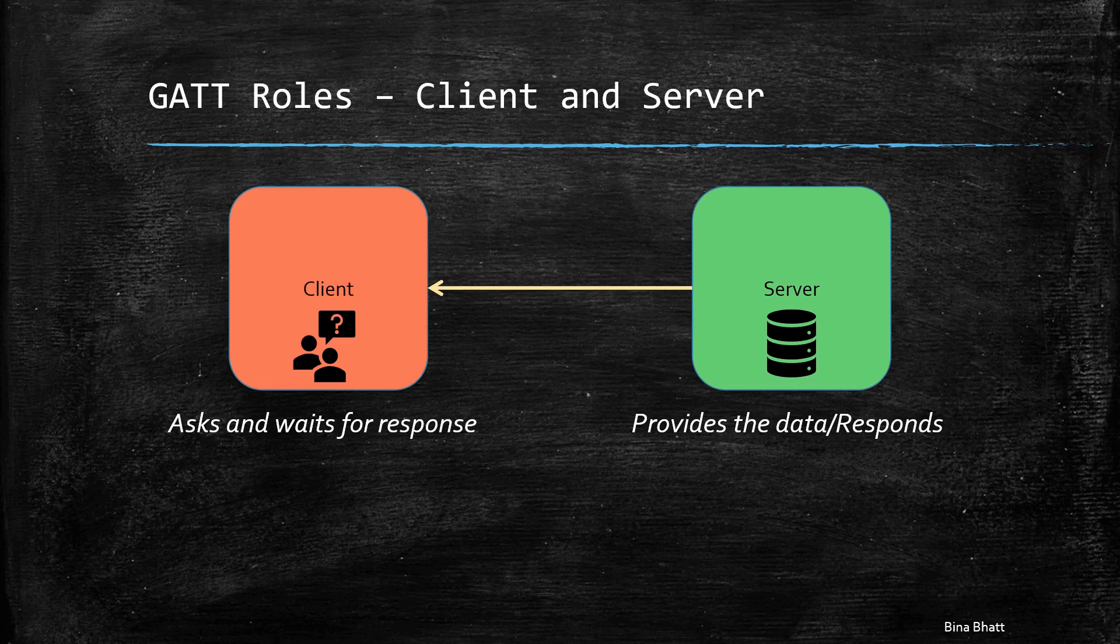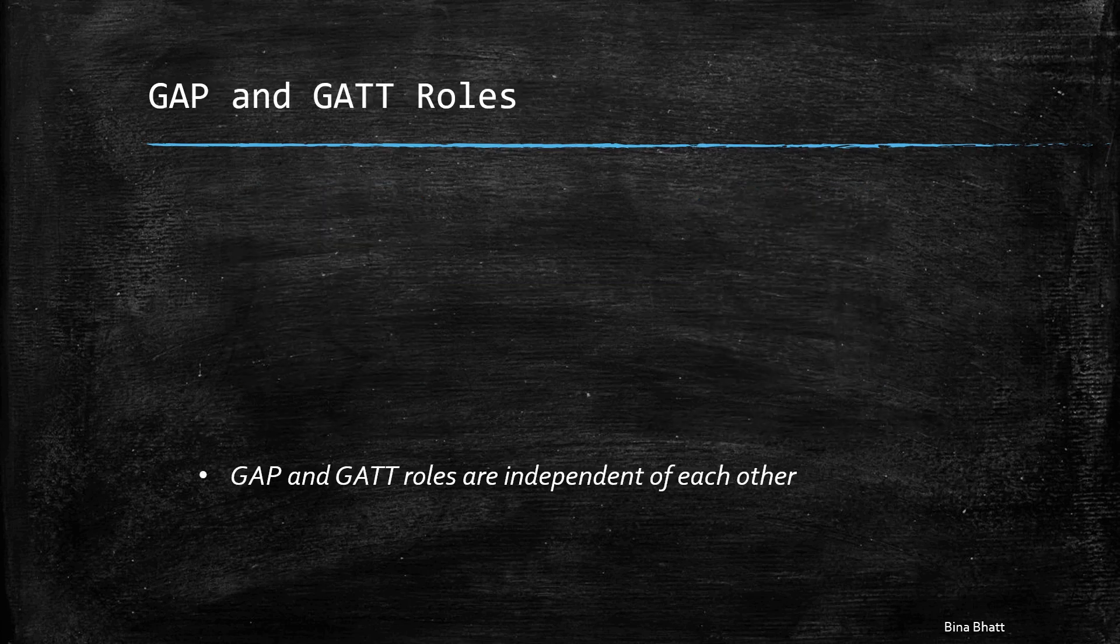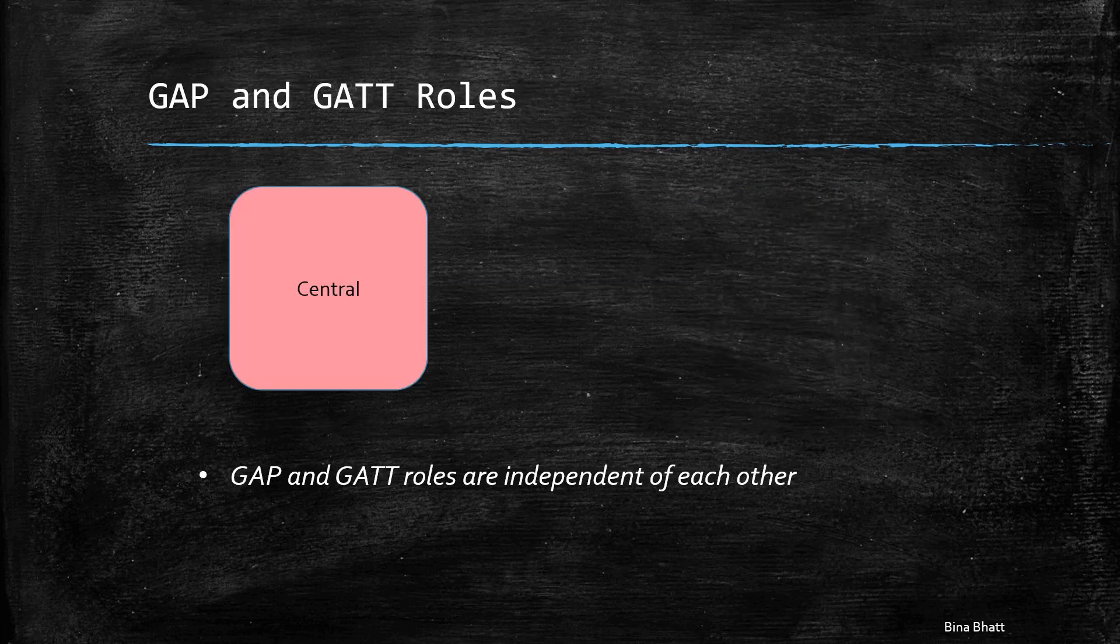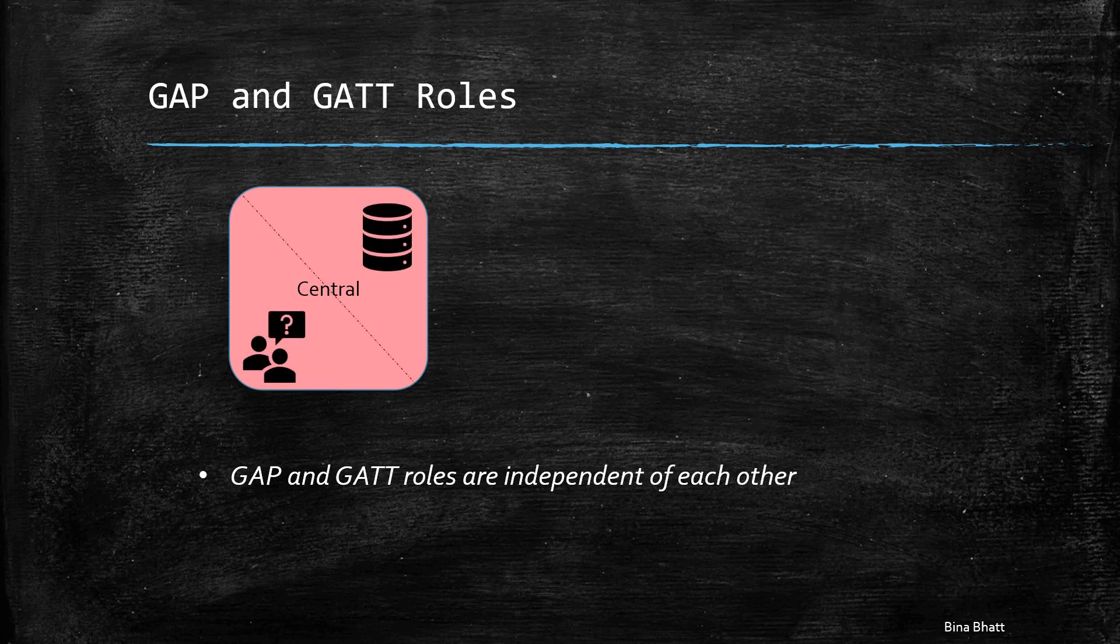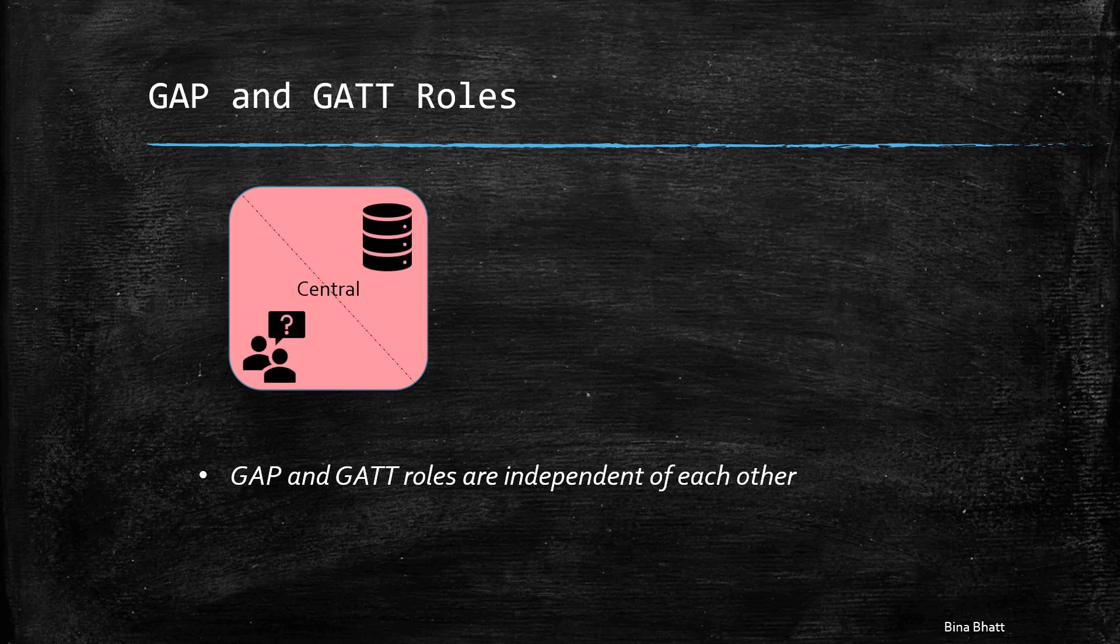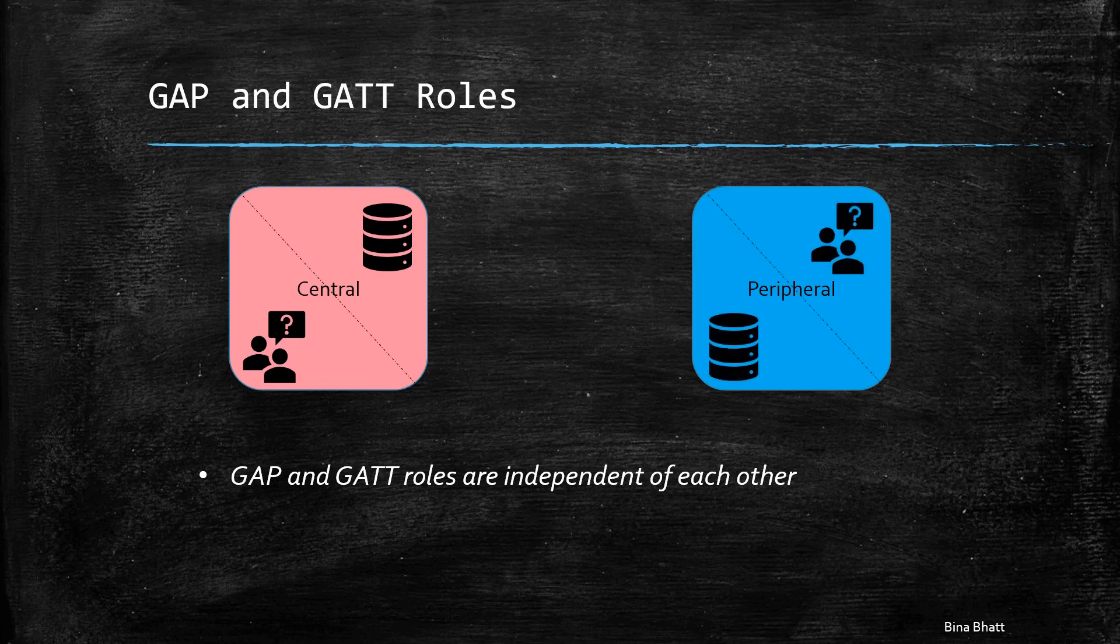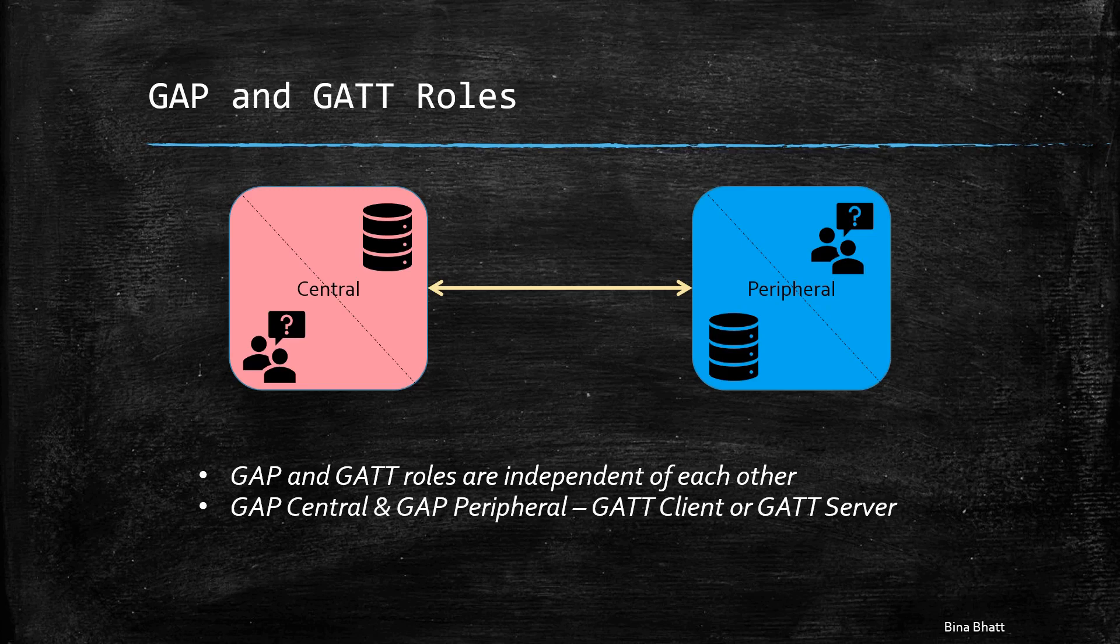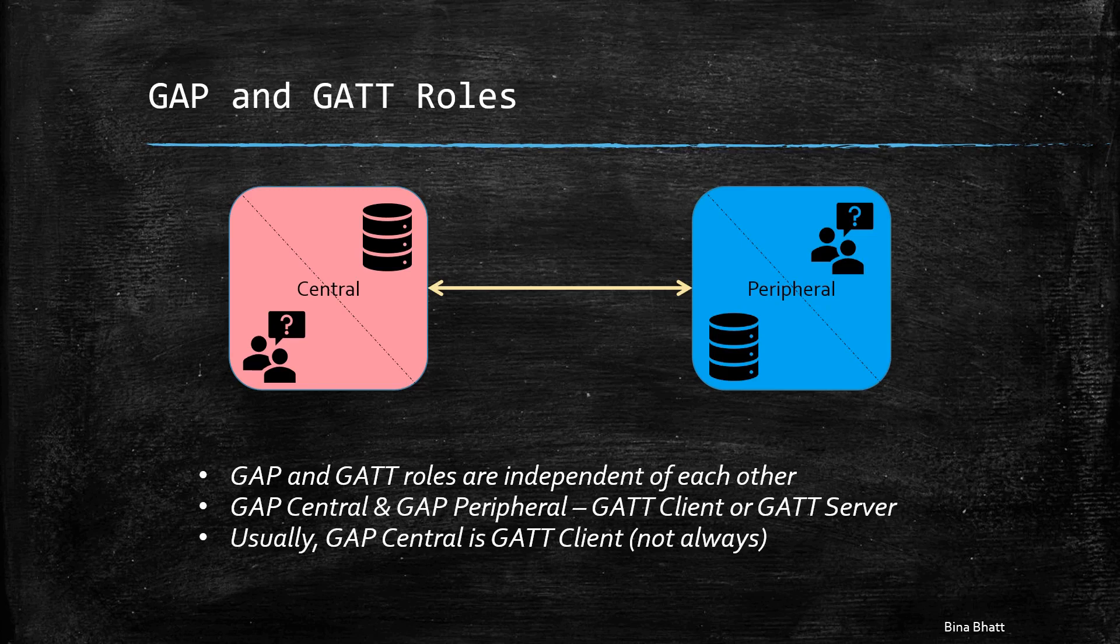Now, both the GAP and GATT roles are absolutely independent of each other. It means that a GAP central can be a GATT client or a GATT server or both. And the same is true for GAP peripheral role as well.